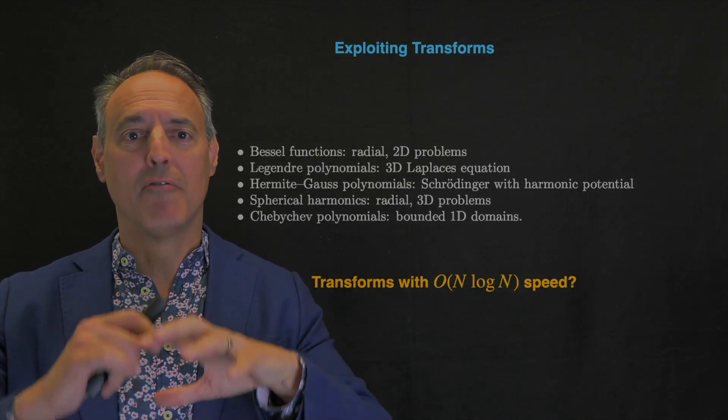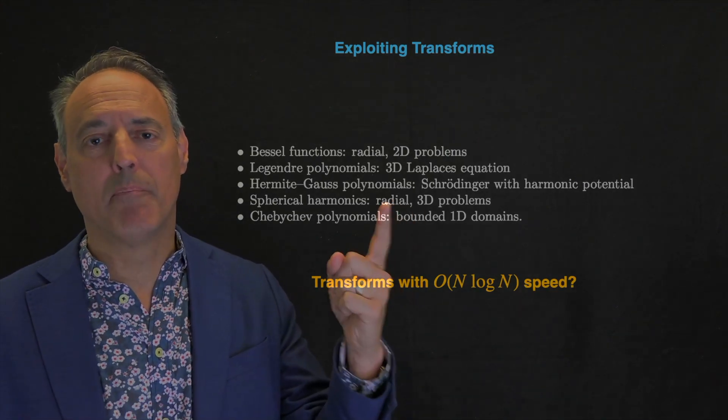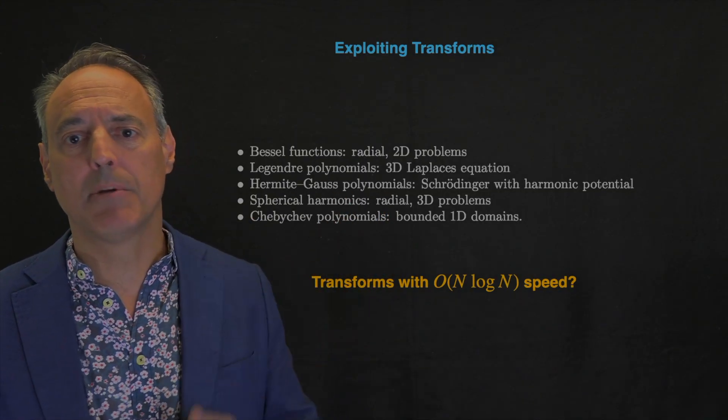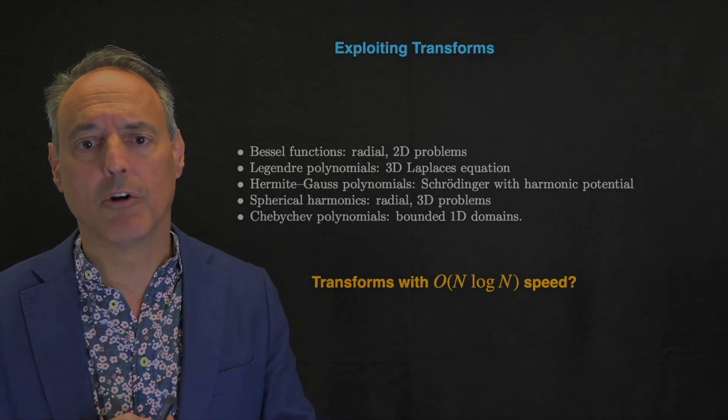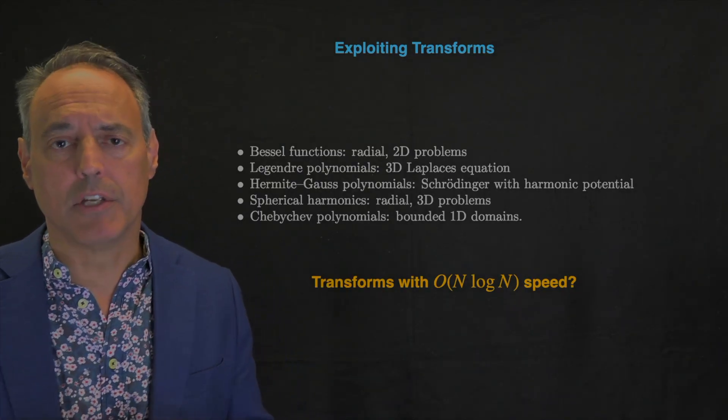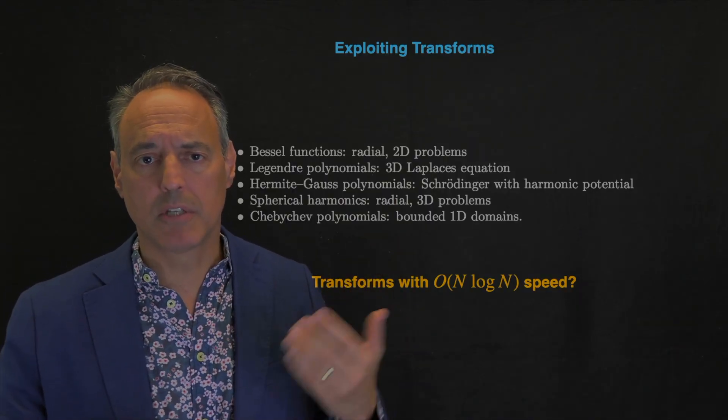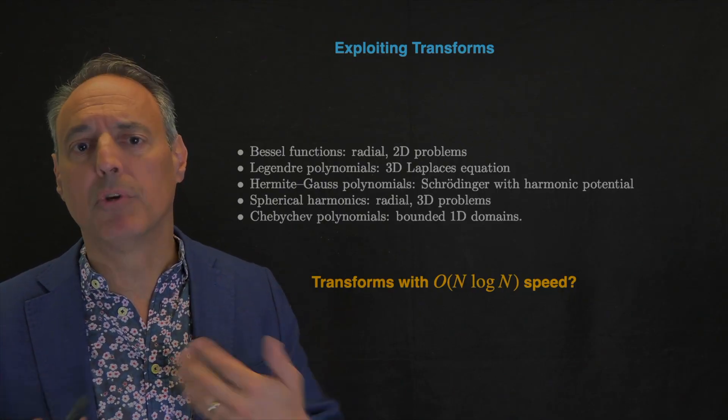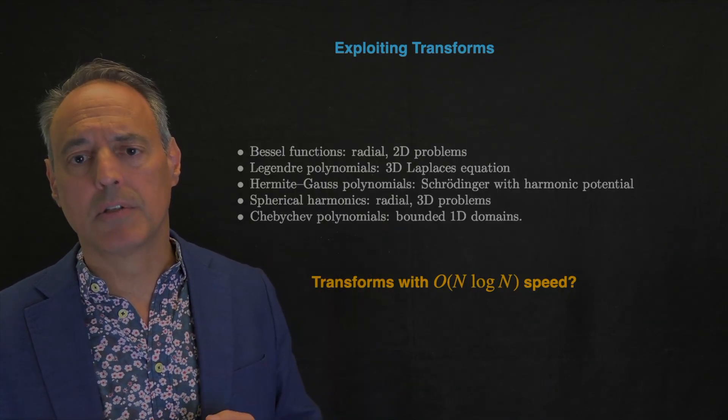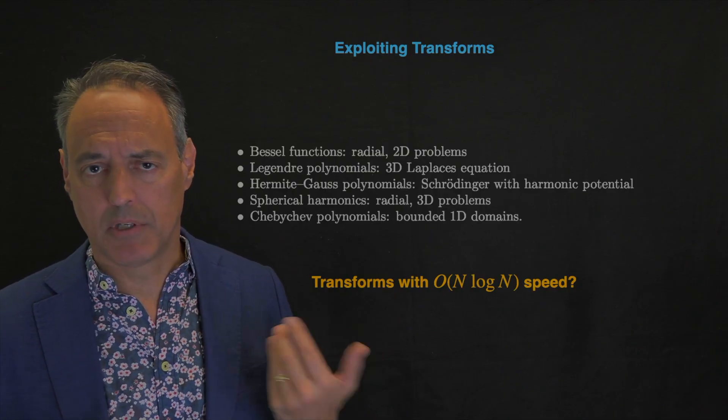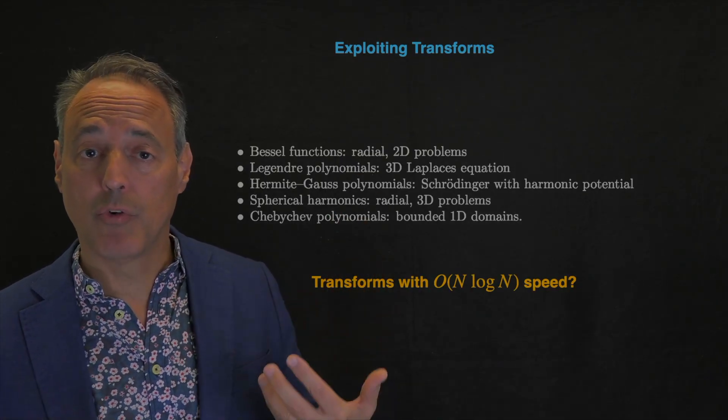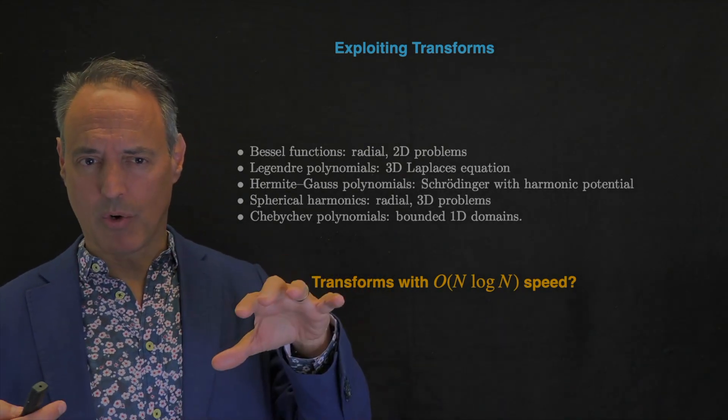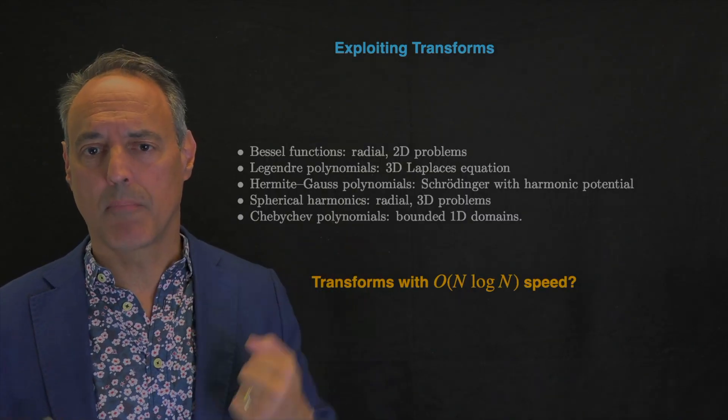Spherical harmonics work for radial 3D problems, like forecasting on the globe. Chebyshev polynomials are for bounded 1D domains. We've used these throughout the 19th and 20th centuries. But as computing advances, we find that computational speed is what we really care about. They're the right coordinate systems to use but often are order n squared to get in and out of the transformed domain.